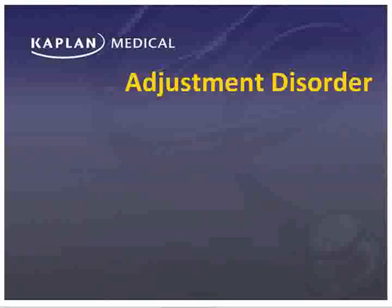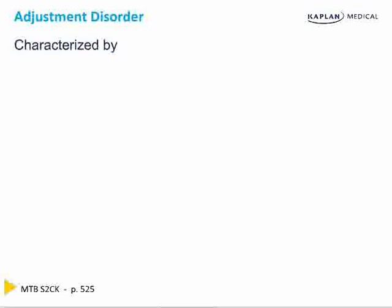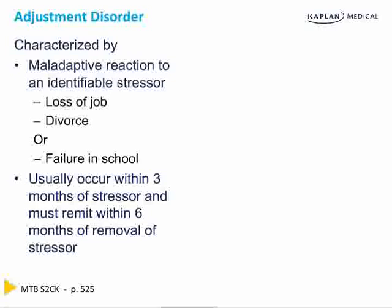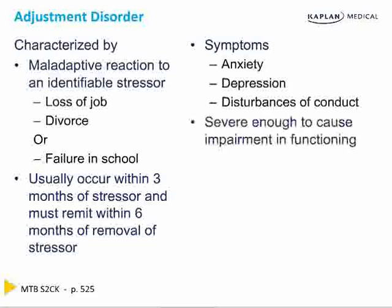Moving on to adjustment disorder. We previously discussed acute stress disorder and PTSD. Adjustment disorder is a maladaptive reaction to an identifiable stressor — like the loss of a job, a divorce, or failure in school. It usually occurs within three months of the stressor and has to remit within six months of removing it. Symptoms include anxiety, depression, and disturbances of conduct. A big differentiator from PTSD is the severity of the stressor — job loss or divorce leads to adjustment disorder, whereas being a prisoner of war, sexual assault, or witnessing a murder leads to PTSD.